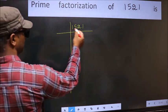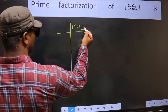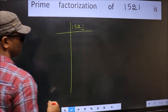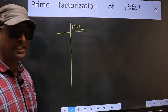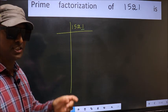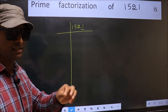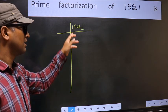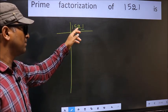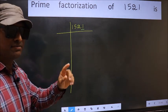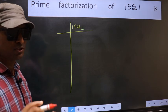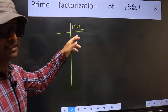In this number, last digit 1 is not even, so not divisible by 2. Next prime number is 3. To check divisibility by 3, we should add the digits: 1 plus 5 plus 2 plus 1. We get 9, and 9 is divisible by 3, so this number is also divisible by 3.